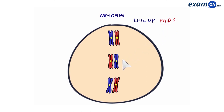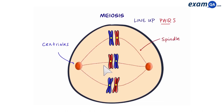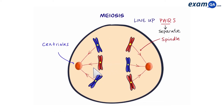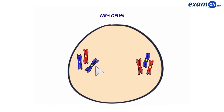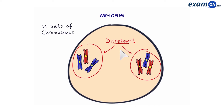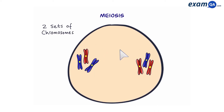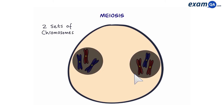Once lined up, we have organelles called centrioles, which produce spindle fibers. These separate the pairs of chromosomes. The chromosome pairs are moved to opposite poles. Now we have two sets of chromosomes; however, they are different. A new nucleus forms around each set of chromosomes. Then the cell gets ready to divide by cytokinesis.